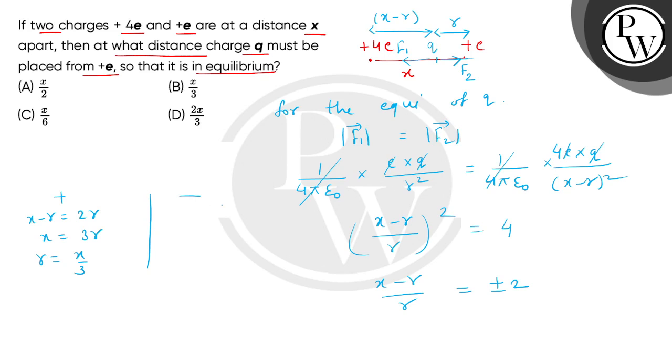Now if we select minus sign, then x minus r equals minus 2r. From this we will find x equals minus r, so r equals minus x, which is invalid because we need a positive answer.